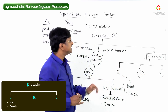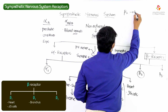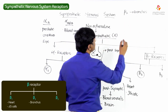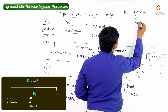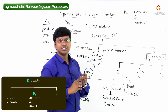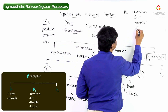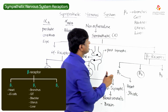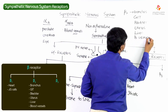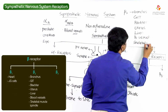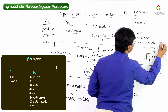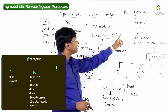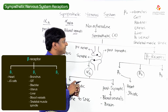Beta 2 receptors are present at multiple places. First and foremost they are present within the bronchus in the respiratory system. Apart from that they are present within the GIT, the urinary bladder, the uterus, the liver, and also within the blood vessels and skeletal muscle spindles.